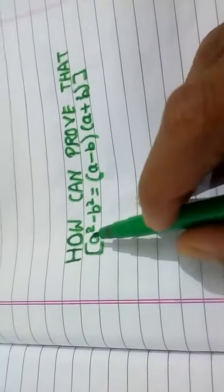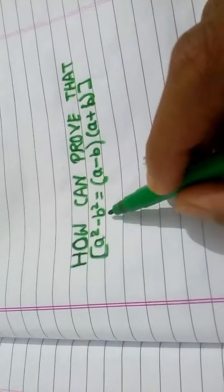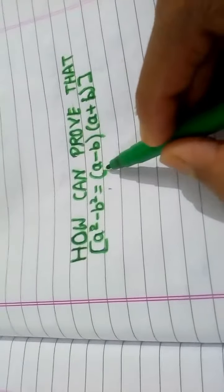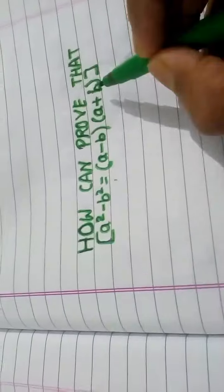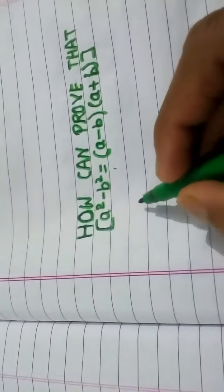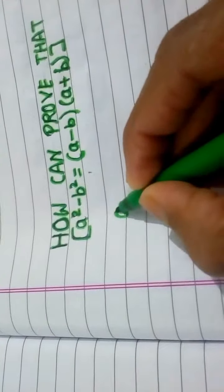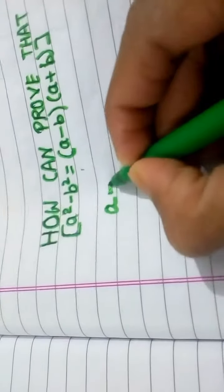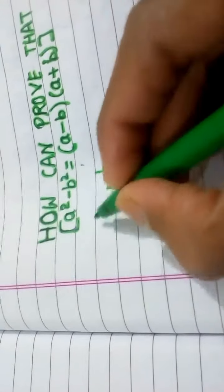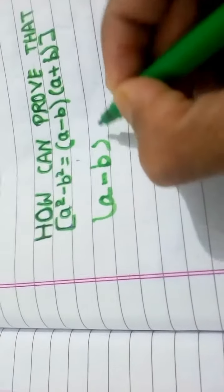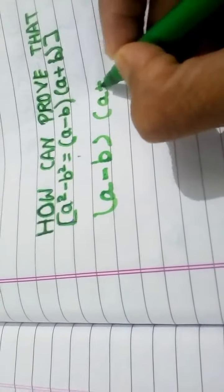Today we know how we can prove that a squared minus b squared equals (a minus b) into (a plus b). So first of all, here we have (a minus b) into (a plus b).